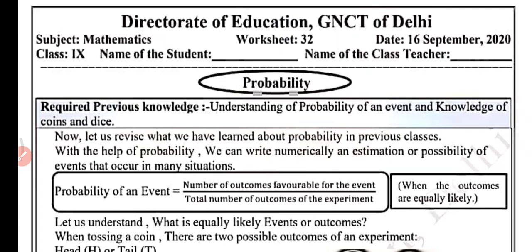So required previous knowledge. Understanding of probability of an event — ek event ki probability kya hoti hai uske baare mein aapko samajh honi chahiye. And knowledge of coins — coins ke baare mein aapko pata hona chahiye. And dice — dice ke baare mein bhi aapko pata hona chahiye.